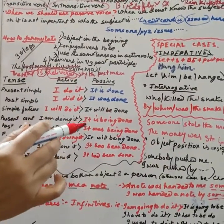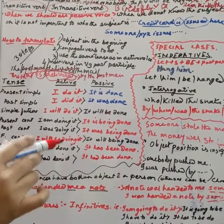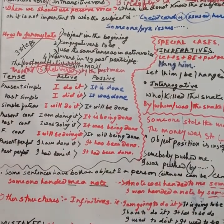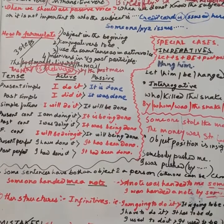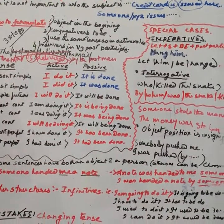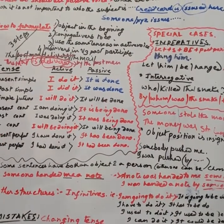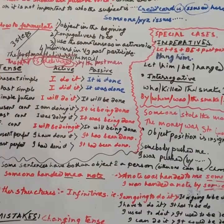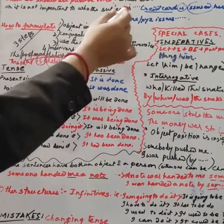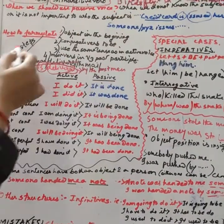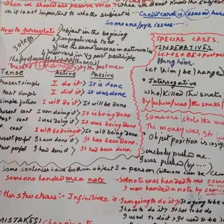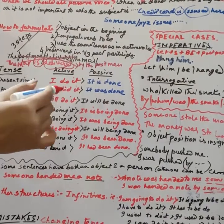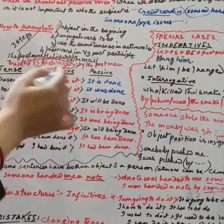It should have one transitive verb. Without an object it is not possible to change to passive voice. When should we use passive voice? Normally, when we do not know the subject or when it is not important to know the subject — we can ignore the subject.